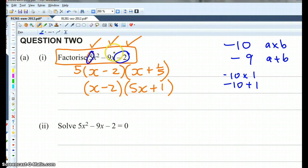So what we're going to do is we're going to replace minus 9x. So we're going to have 5x squared. Instead of minus 9x, we're going to have minus 10x plus x, because minus 10x plus x is minus 9x, minus 2.